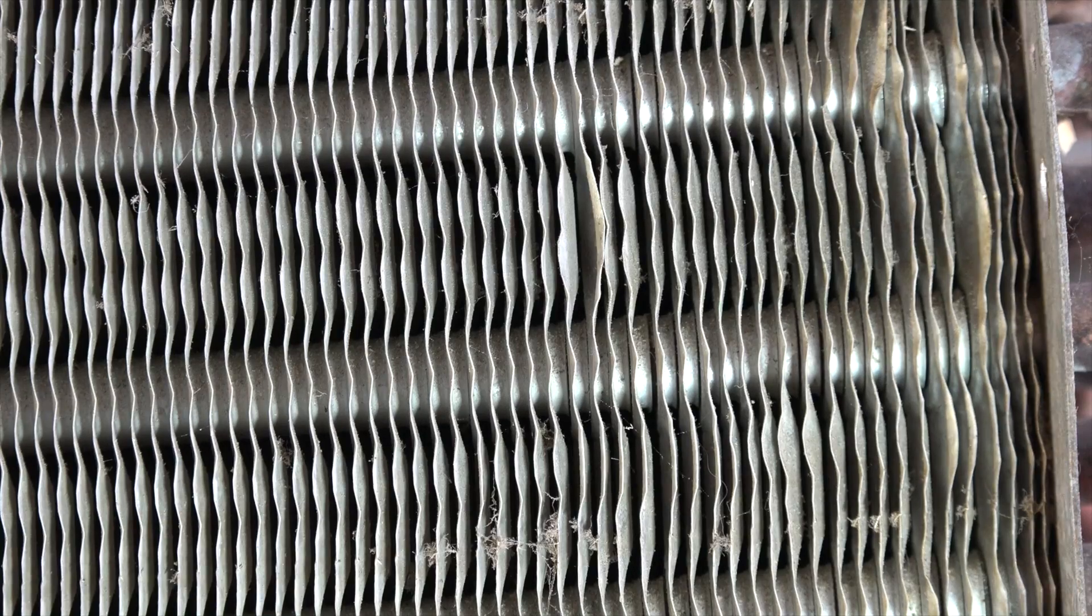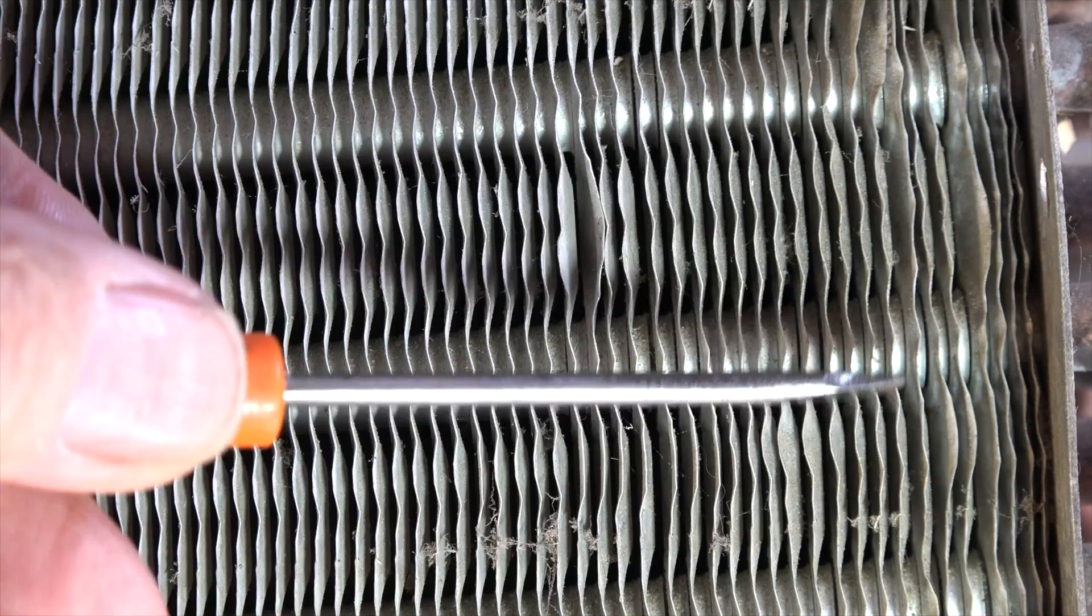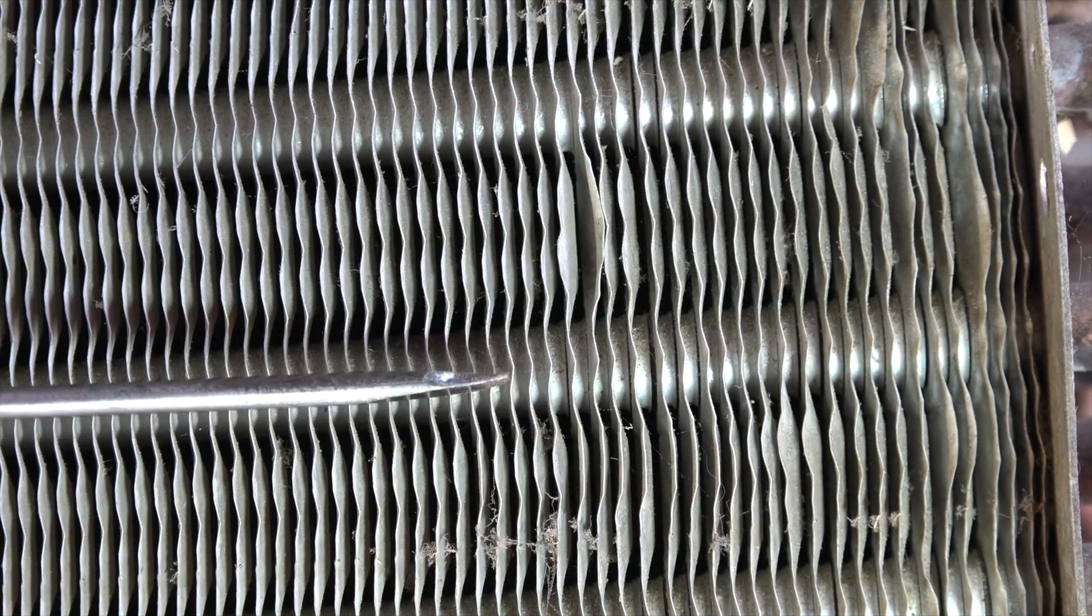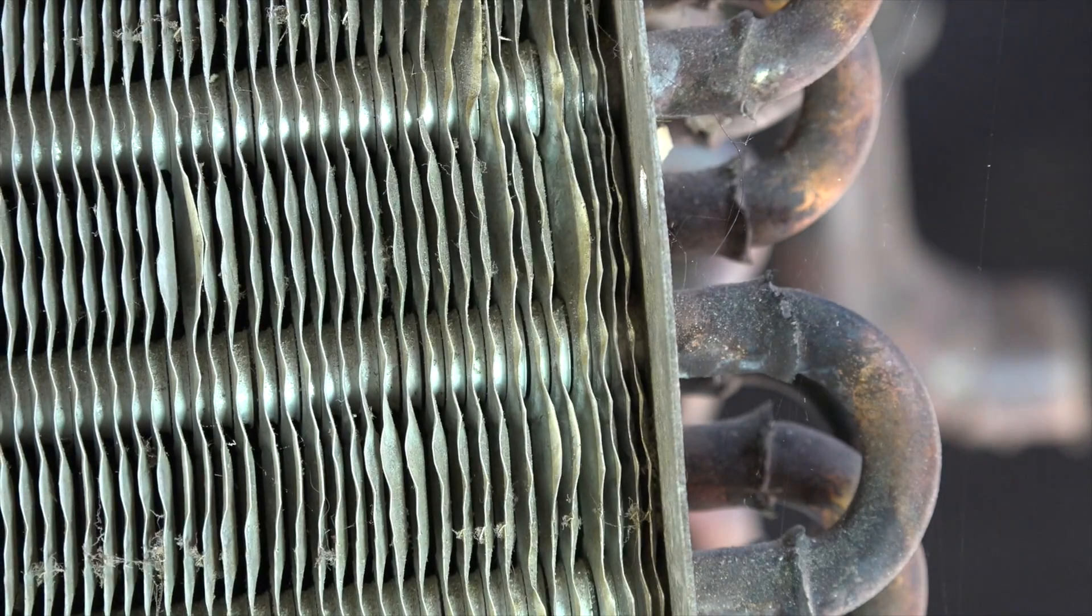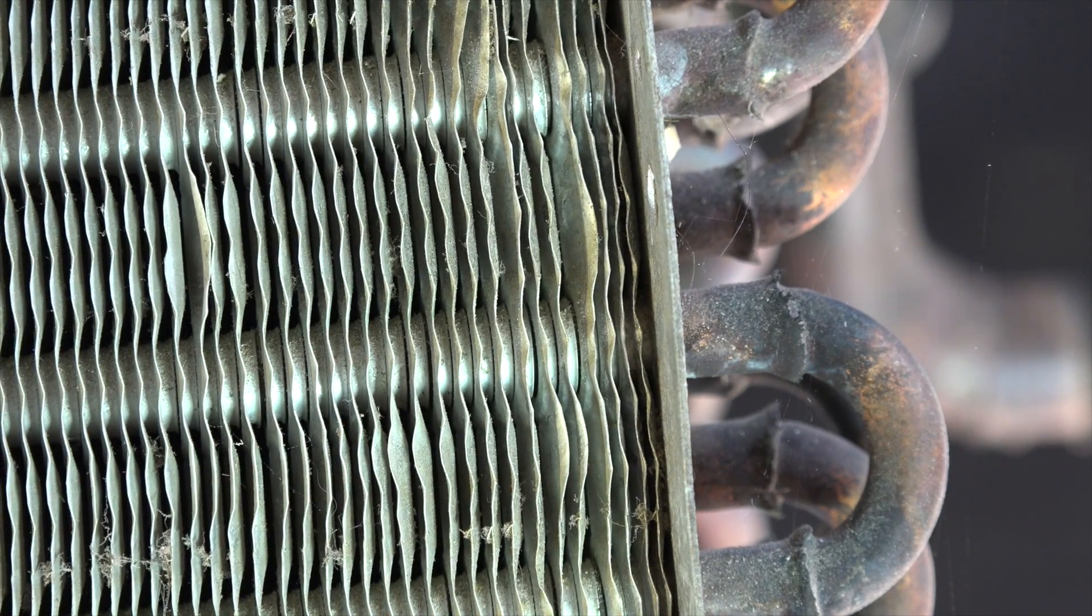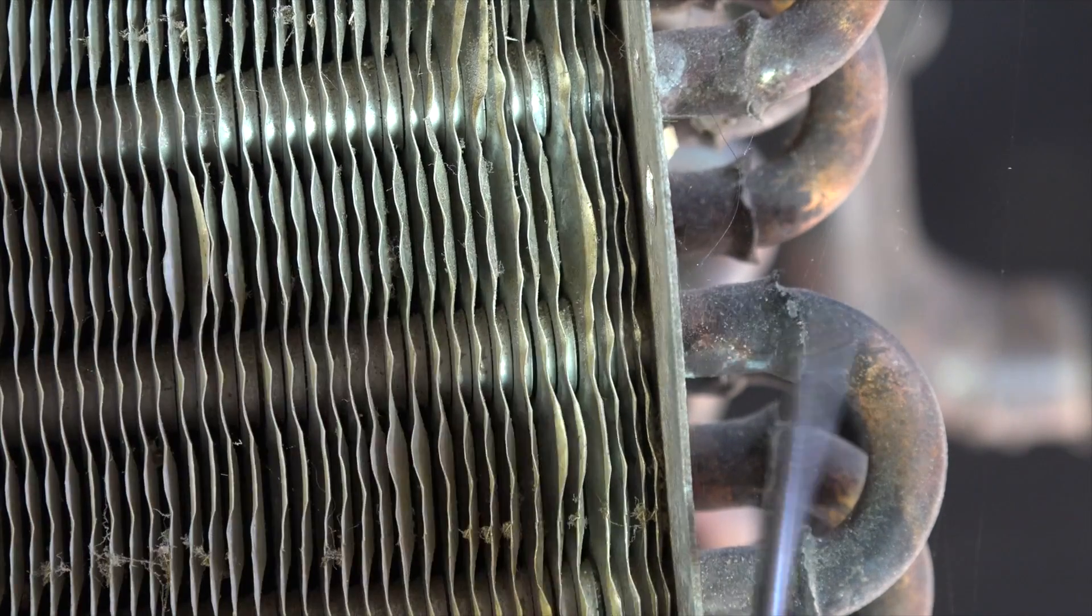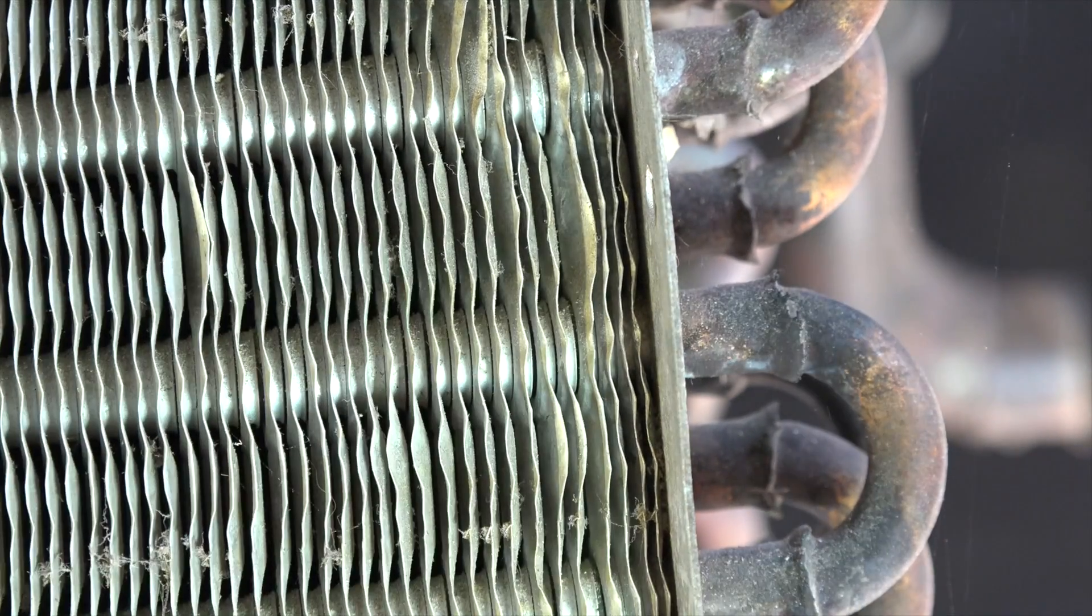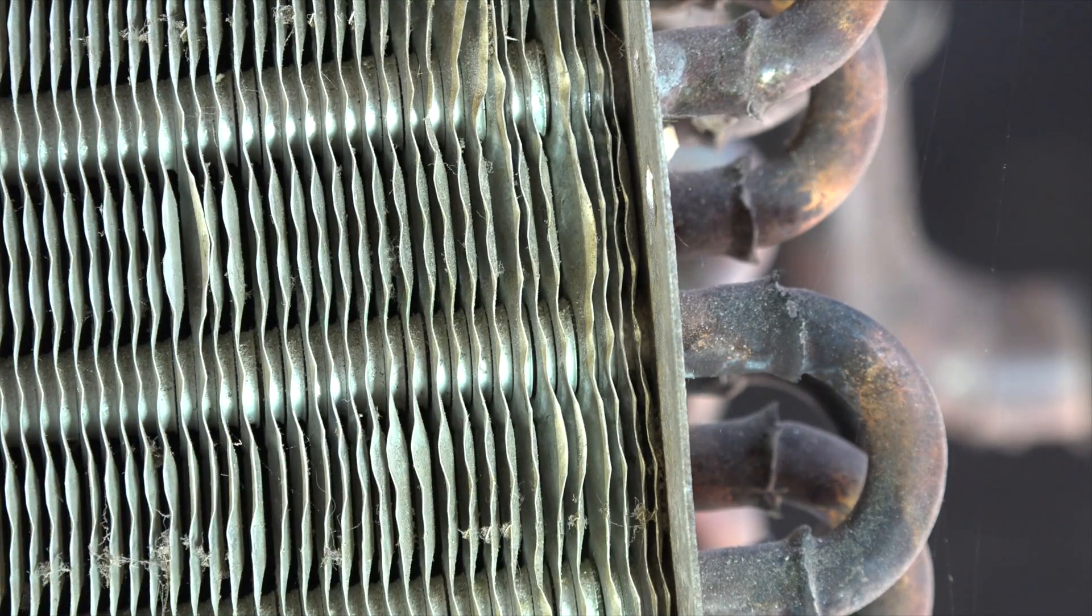The fins are just there to extend the surface area of the coil. If I took a temperature of this tubing in here, perhaps went to one of these U-tubes, I would get a closer temperature to that of the evaporating temperature because the refrigerant is evaporating right inside and all it has to do is travel through the thin-walled copper.